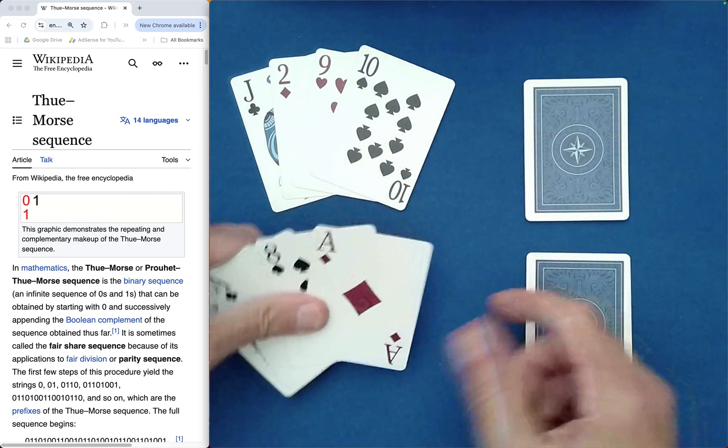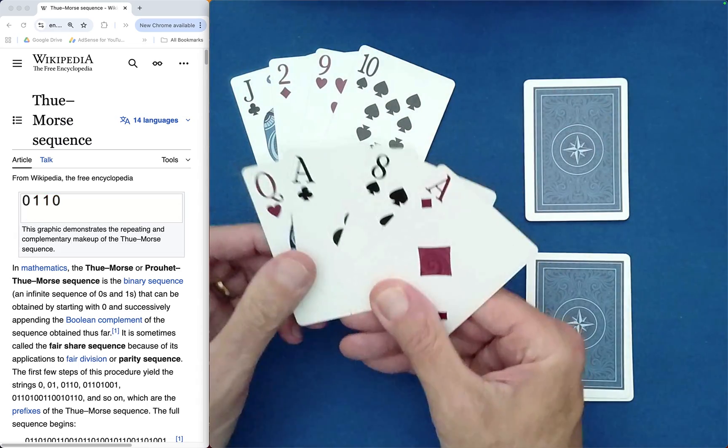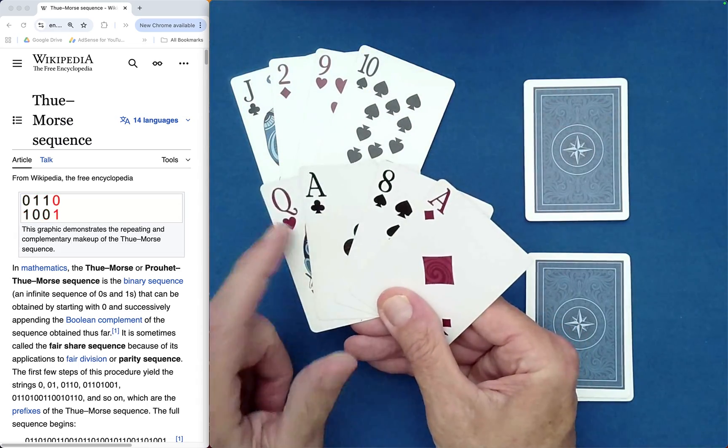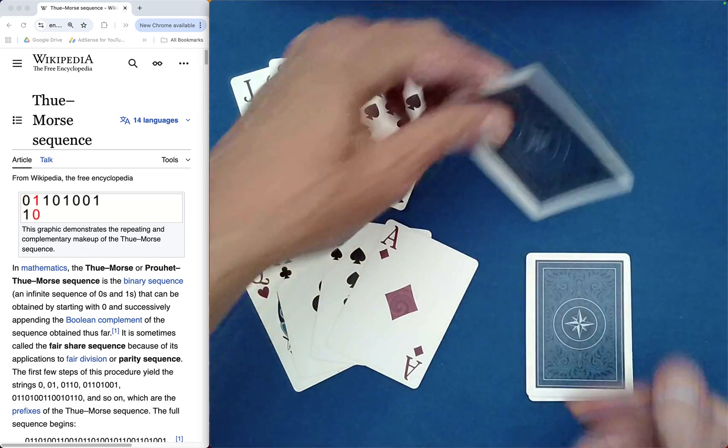What about Spectator 2, Spectator 3? Club, heart, spade, diamond. Yes, they're happy too.